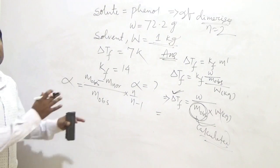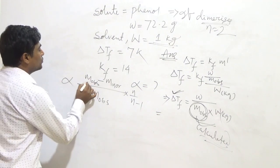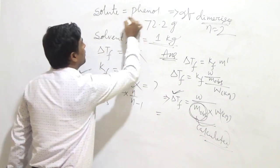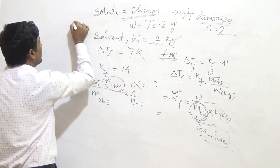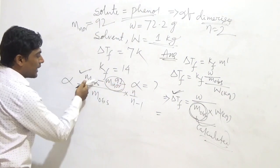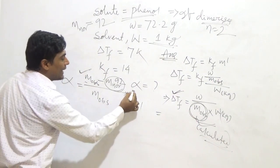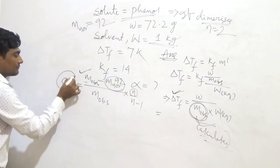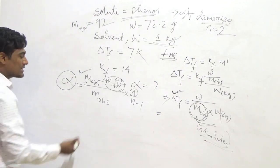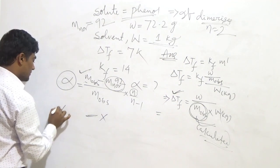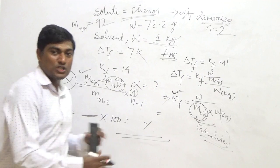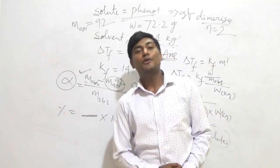Put the calculated M observed into the formula. M normal, the true molecular mass of phenol, is equal to 94. Put in 94 for M normal, the calculated M observed, and n equals 2, then solve to get alpha. That fraction multiplied by 100 gives the percent degree of association. In this way, you can solve the numerical. Thank you. We will discuss further in the next class.